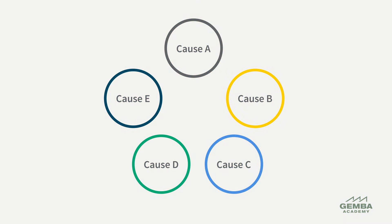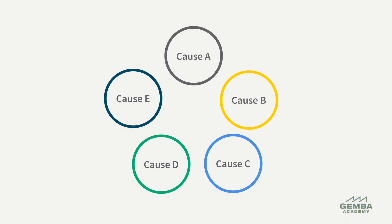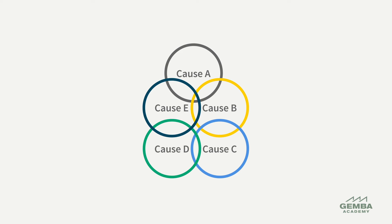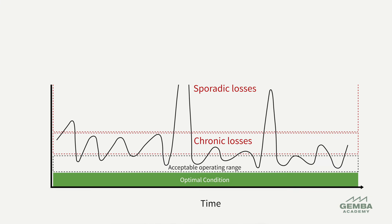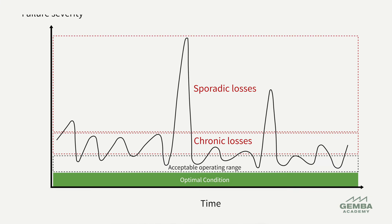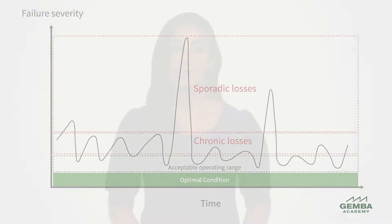However, problems that result from a complex interaction of causes may be difficult to address with 5Y or other cause and effect analysis methods. Such problems can become chronic and remain unresolved because without a known cause, the countermeasures we try often miss the mark. Even for problems with clear causes, we may struggle to find effective countermeasures due to complex interactions of causes.